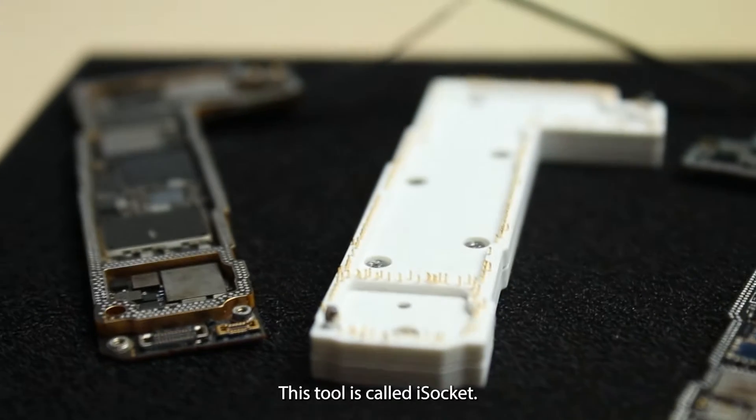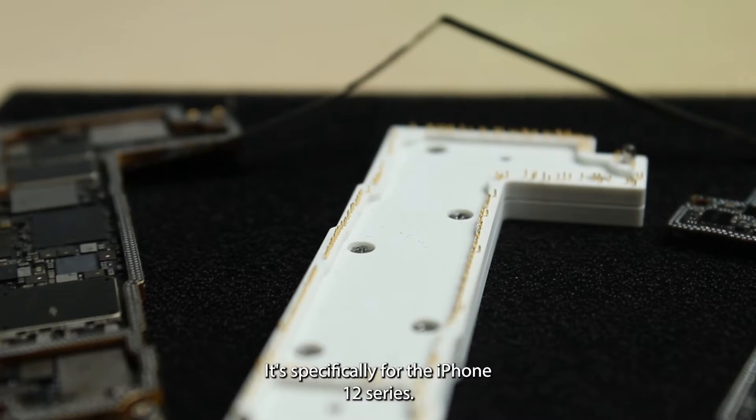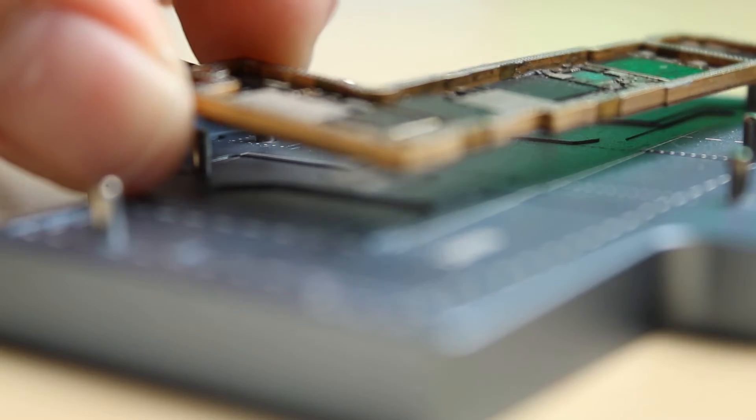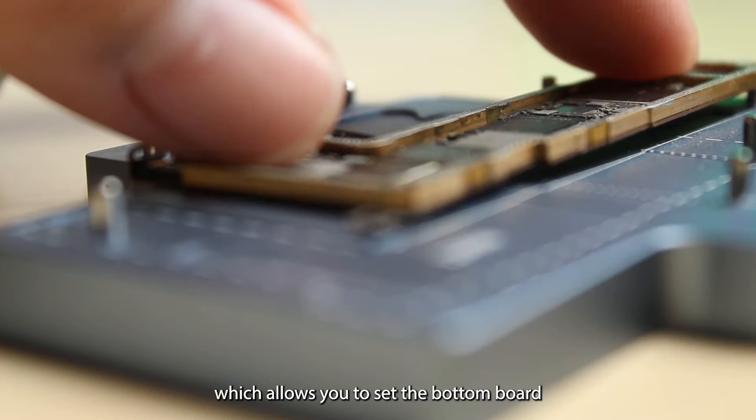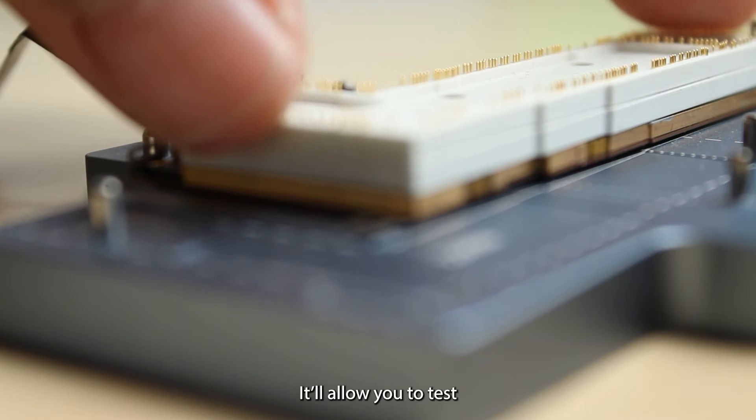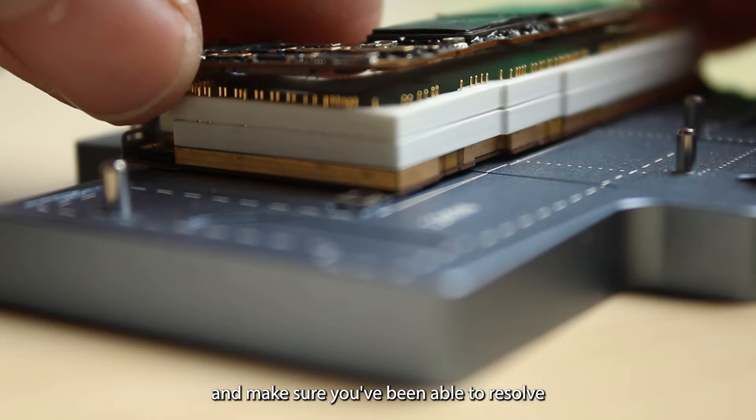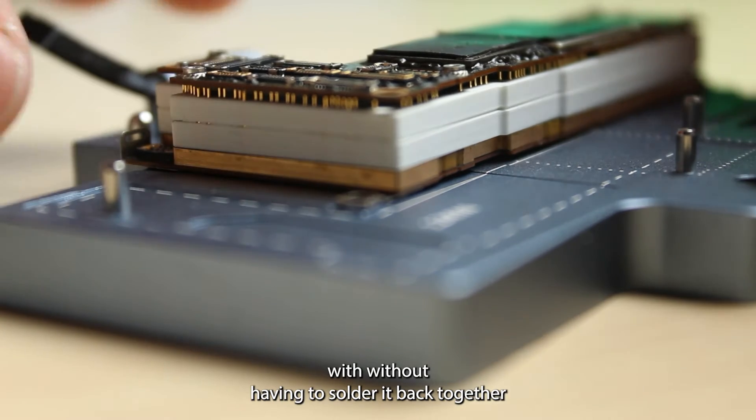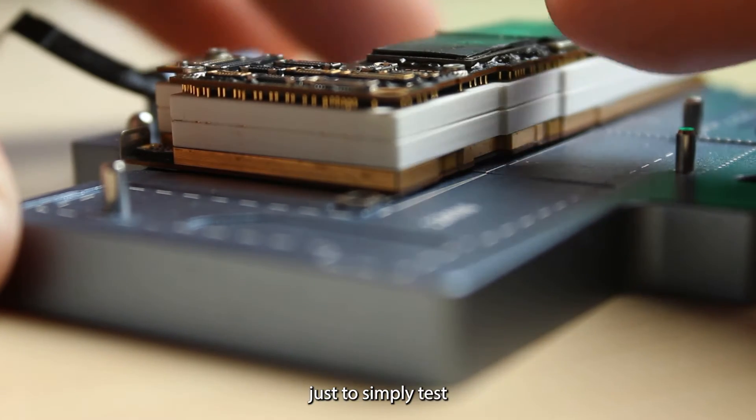This tool is called iSocket. It's specifically for the iPhone 12 series. It's a motherboard layered test frame which allows you to set the bottom board and the top board together using this spacer. It'll allow you to test and make sure you've been able to resolve the issue that you may have been dealing with without having to solder it back together just to simply test.